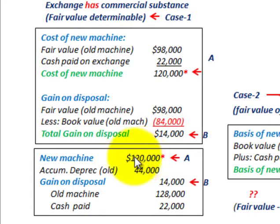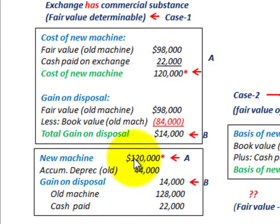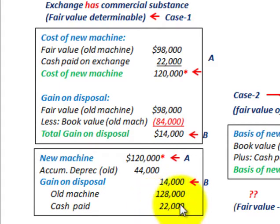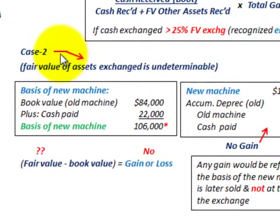Now we can record the journal entry for case one — for the corporation trading in their old machine to receive the new machine. We record the new machine at its cost of $120,000. Then we remove the old machine: we debit accumulated depreciation at $44,000, recognize a gain on disposal of $14,000 on the income statement, credit the old machine at its original cost of $128,000, and reduce cash by $22,000 for the extra payment made on this exchange.